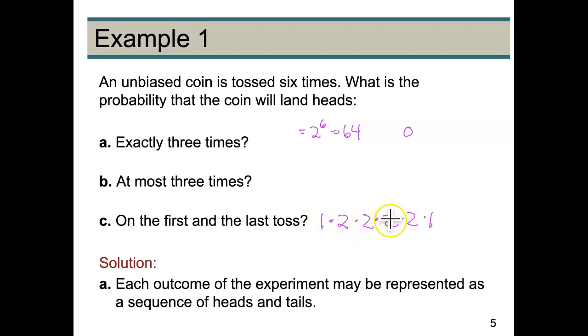So this is going to be 2, 4, 8, 16. So we are going to have 16 ways for it to land heads on the first and last toss. So the probability is going to be 16 out of 64 or one quarter.